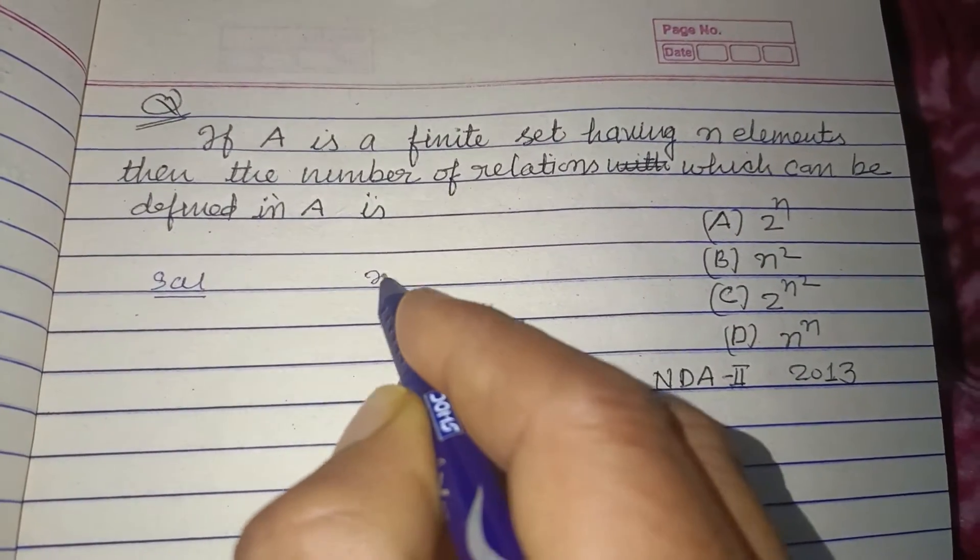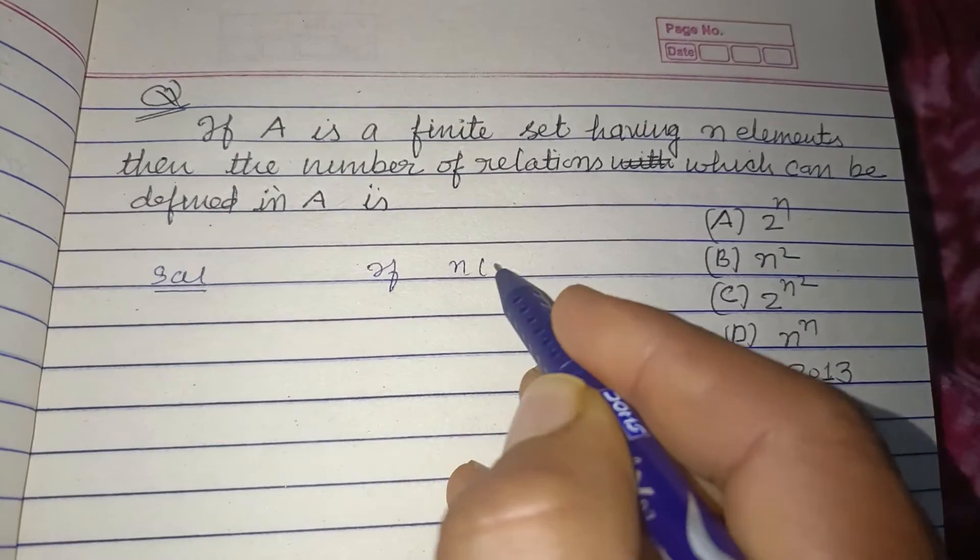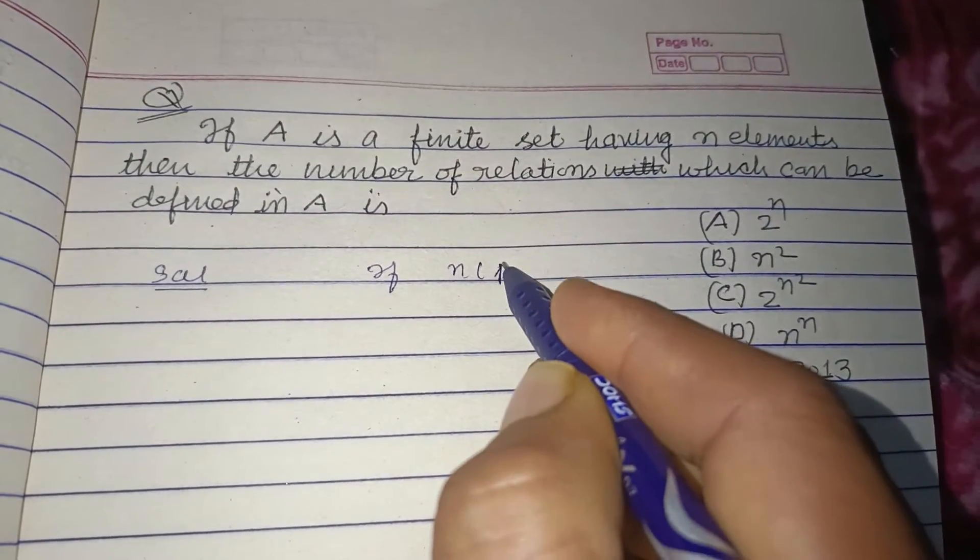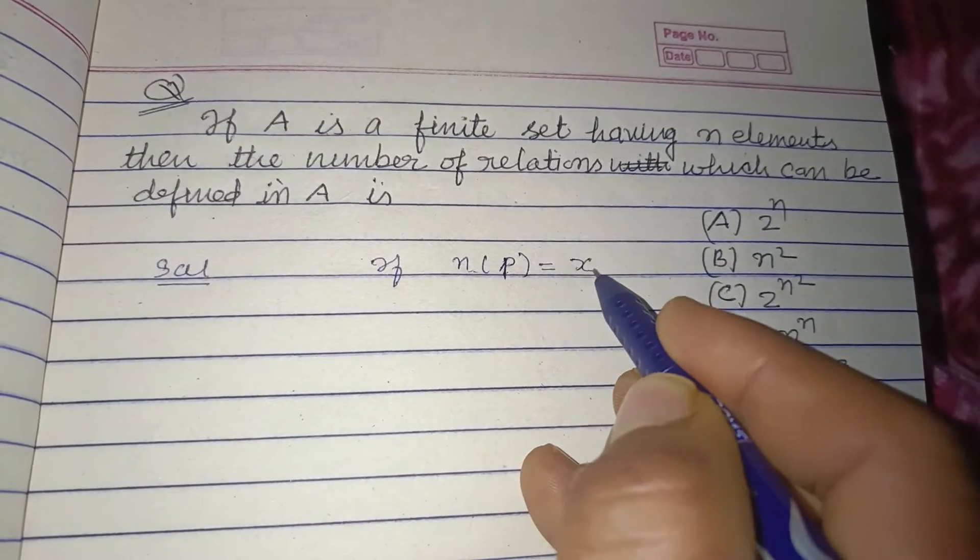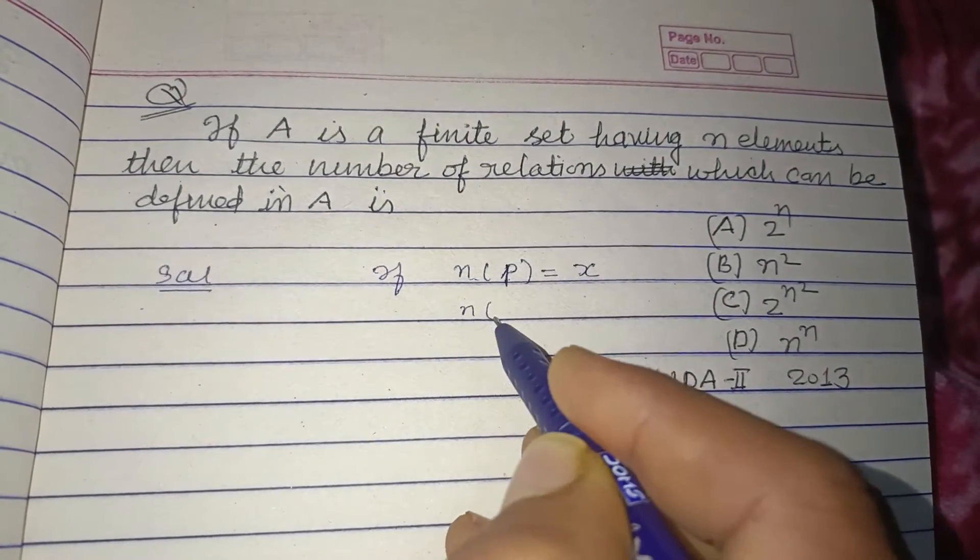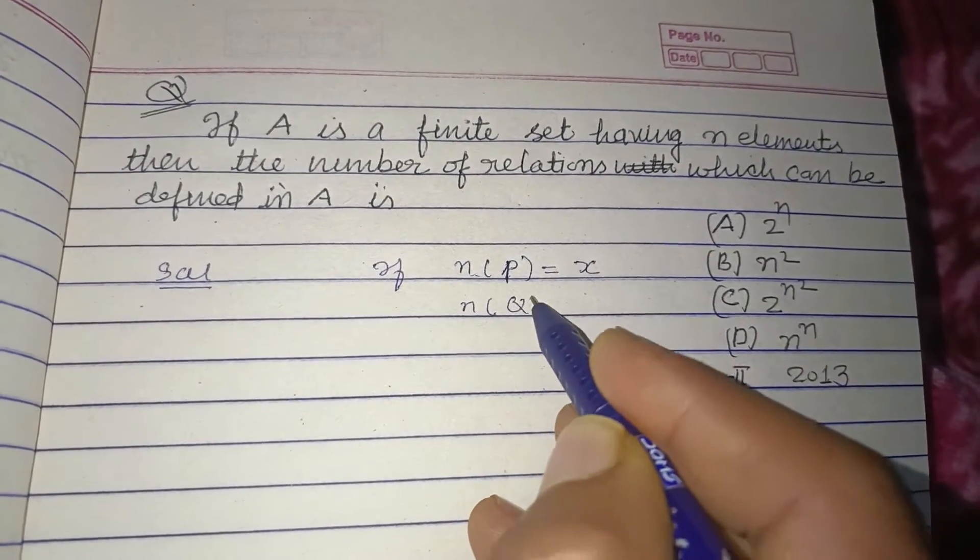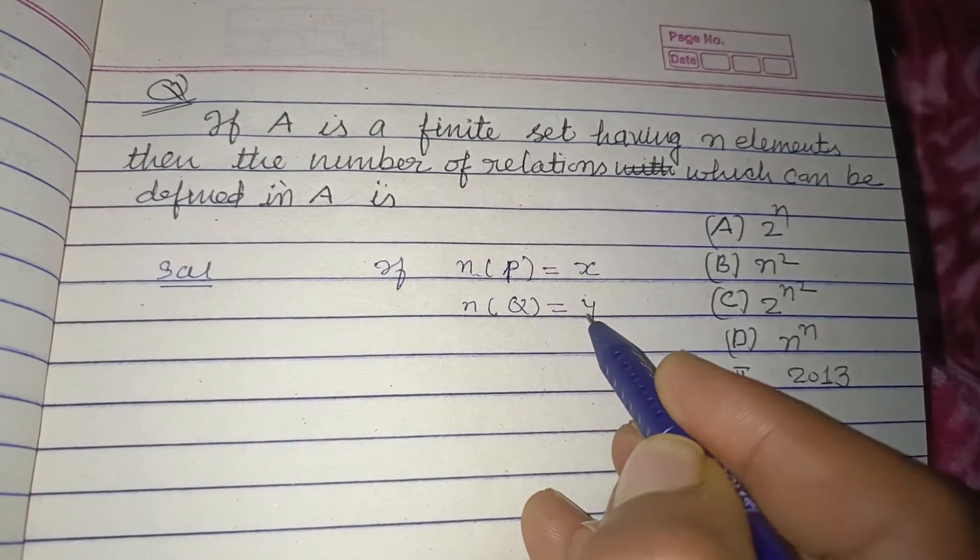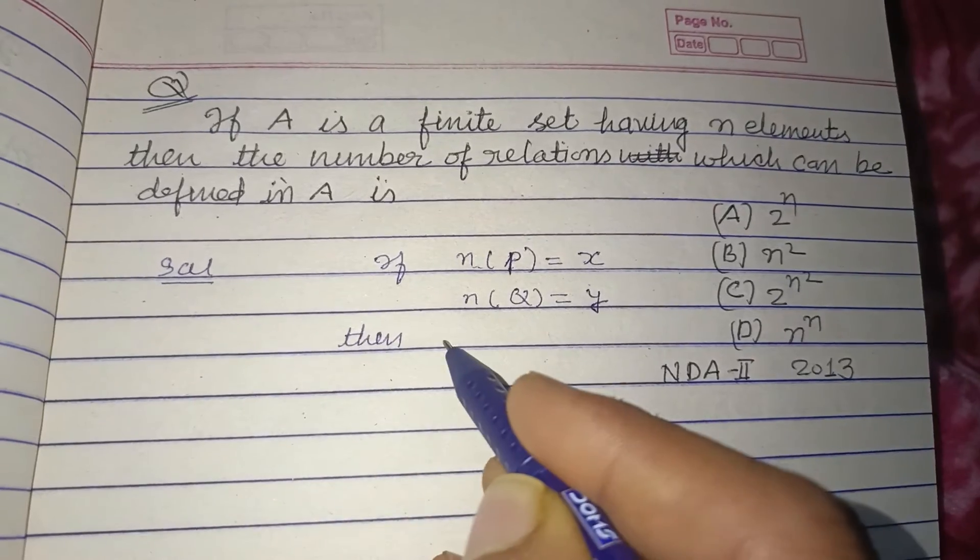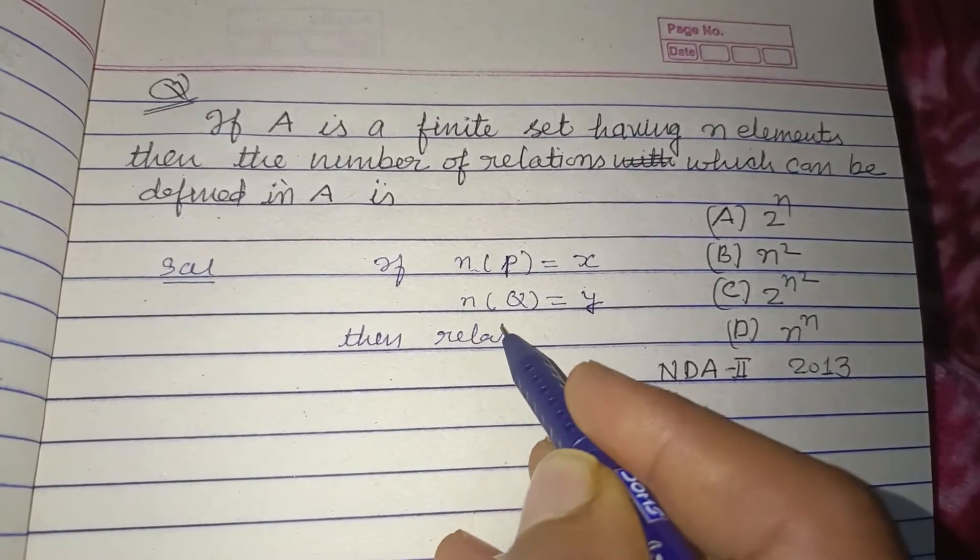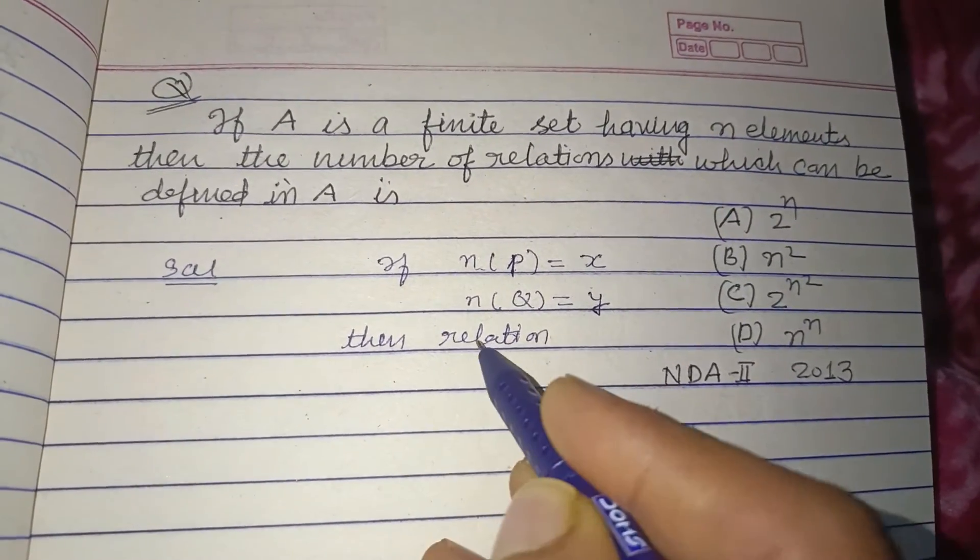basics. If there are two sets P having number of elements x and number of elements in set Q is y, then the number of relations